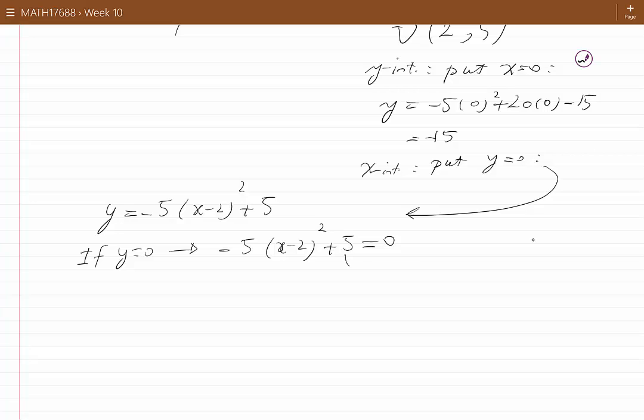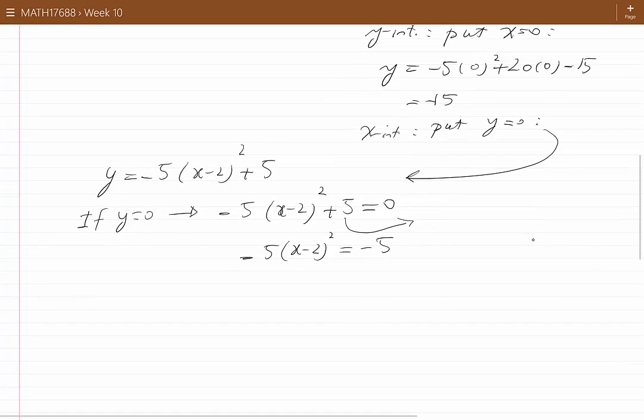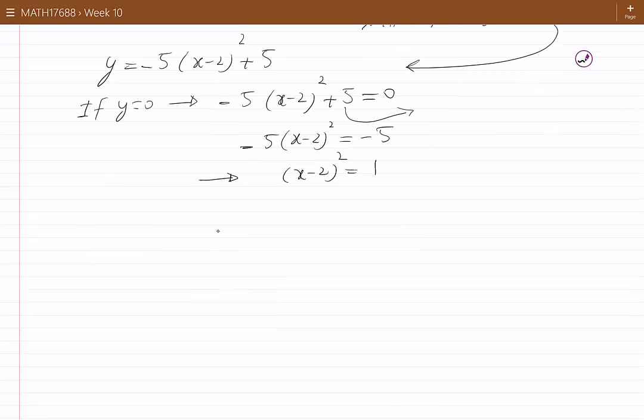Let's move this 5 to the other side of the equation. We would have minus 5(x minus 2) squared is equal to minus 5. If we divide both sides of the equation by minus 5, we see that (x minus 2) squared is equal to 1. If we take the root of both sides of this equation, we arrive at x minus 2 equal to plus or minus 1. And if we move the minus 2 to the other side, we would have x is equal to 2 plus or minus 1.